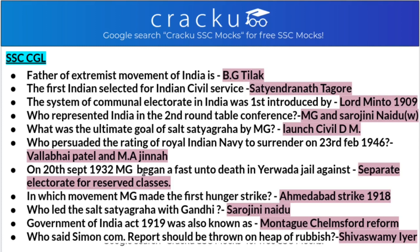Who persuaded the ratings of the Royal Indian Navy to surrender on 23rd February 1946? It was done by Sardar Vallabhbhai Patel and MA Jinnah, that is Mohammad Ali Jinnah. On 20th September 1932, Mahatma Gandhi began a fast unto death in Yeravda Jail against the separate electorate for reserved and depressed classes — this was one of the divide and rule policies of the British. That fast led to his imprisonment in Yeravda Jail.